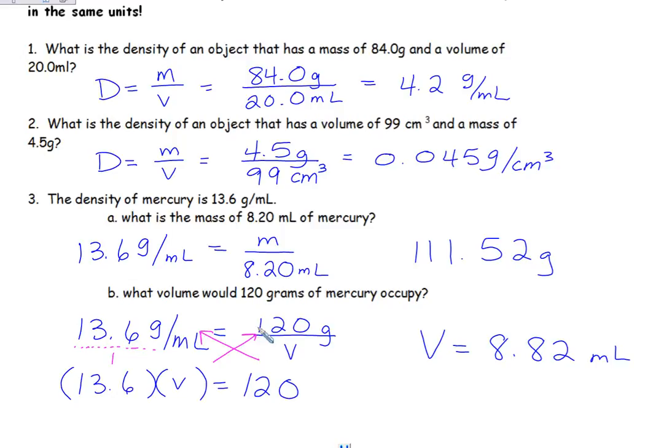And again, if you get an answer in your calculator and you think it looks a little fishy, plug it in. Try it. If I take 120 grams divided by the volume that I calculated, I should get 13.6 grams per milliliter.